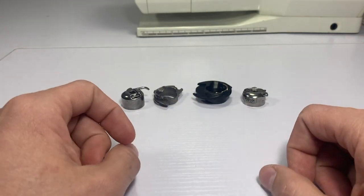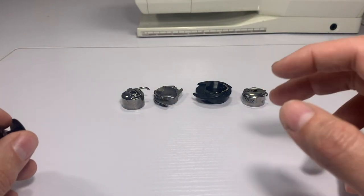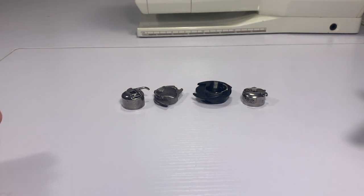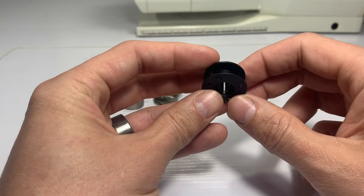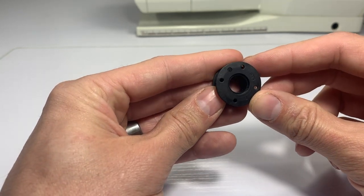Now although I just have four examples here, there are over 40 different styles of bobbin cases such as Bernina's new style which is actually a jumbo front-loading plastic bobbin case.